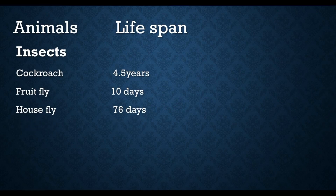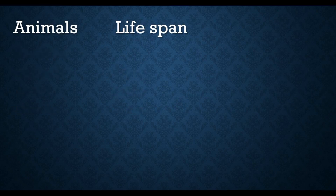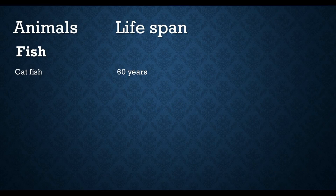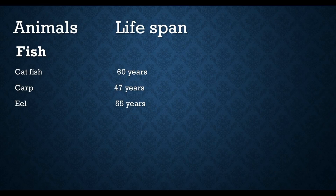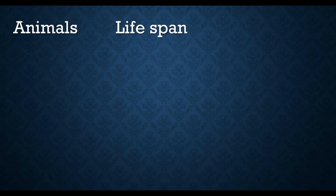House fly lifespan is 76 days. Fish: catfish lifespan is 60 years, carp lifespan is 47 years, eel lifespan is 55 years, and mosquito fish lifespan is 2 years. Next is Amphibia — frog lifespan is 7 years.